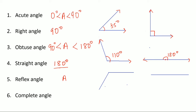The next type is the reflex angle. A reflex angle is greater than 180 degrees and less than 360 degrees — so it lies between 180 and 360 degrees. Here, this angle is greater than 180 but less than 360, so this is an example of a reflex angle. For example, this could be 210 degrees.